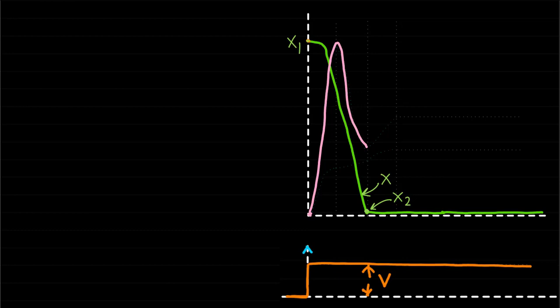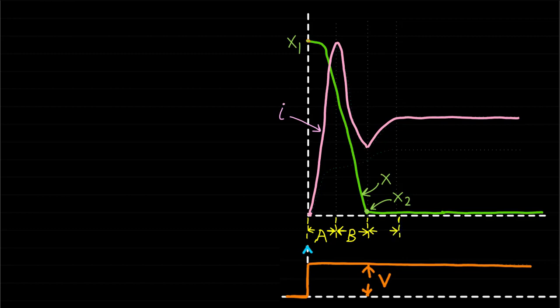After that, the current starts to increase at a certain time constant because the inductance is fixed when there is no movement. Let's divide this graph into four sections A, B, C, and D to explain why the current has this response.